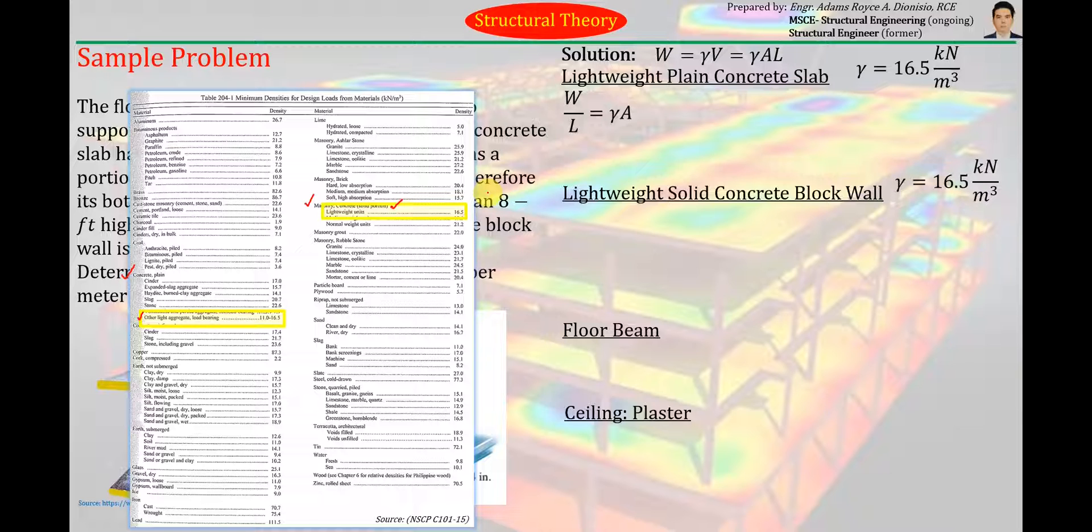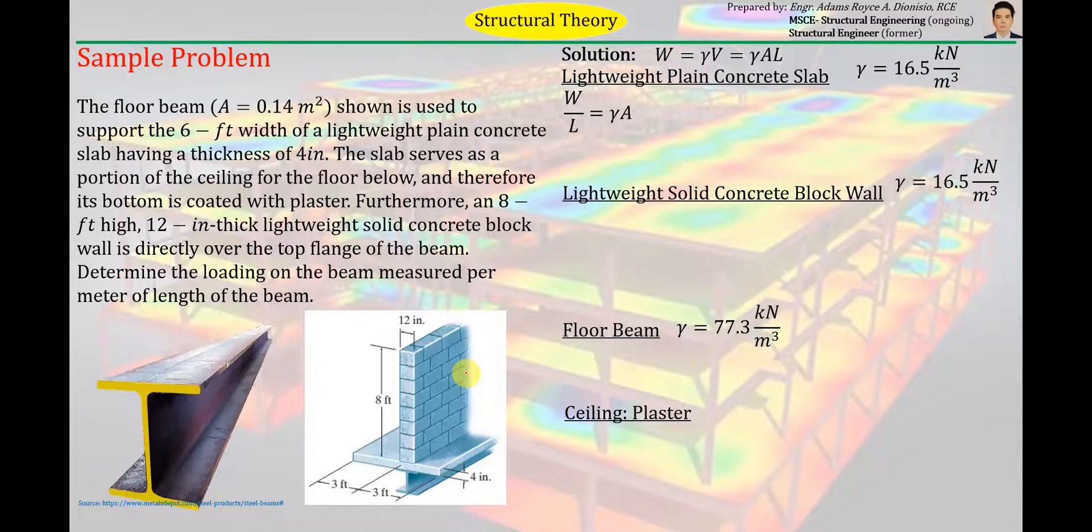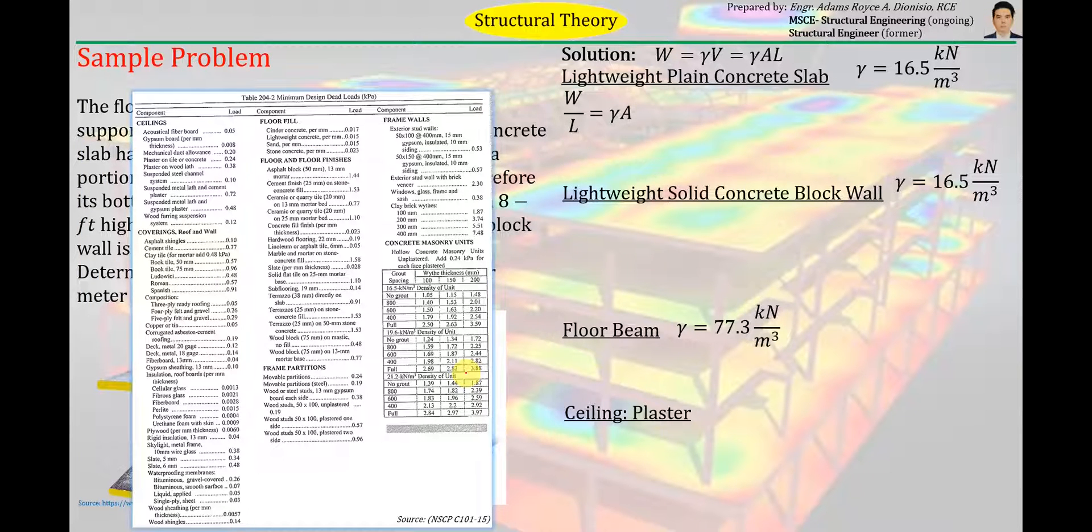Then lastly, yung floor beam, obviously steel yung floor beam natin. So let us just go to the letter S. Steel. Ito yung steel. Although cold form yan. Pero ang nakalagay dyan, the unit weight of the steel is 77.3 kN per cubic meter. And then lastly, for the ceiling plaster, which is a dead load applied to a surface, we will refer to table 2-2 kasi applied to a surface siya. So pwede tayo sa ceilings. Ito. And then hanapin lang natin yung plaster. Plaster. So ito yan. According to the table, plaster on tile or concrete is equal to 0.24 kilopascal. So yan yung tatawagin natin na uniform load. Uniform dead load for plaster. 0.24 kN per meter squared.